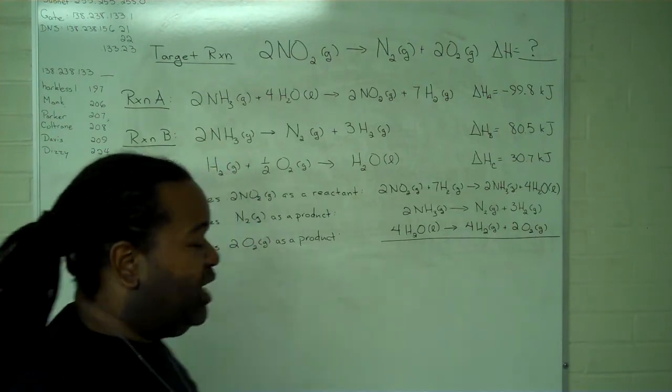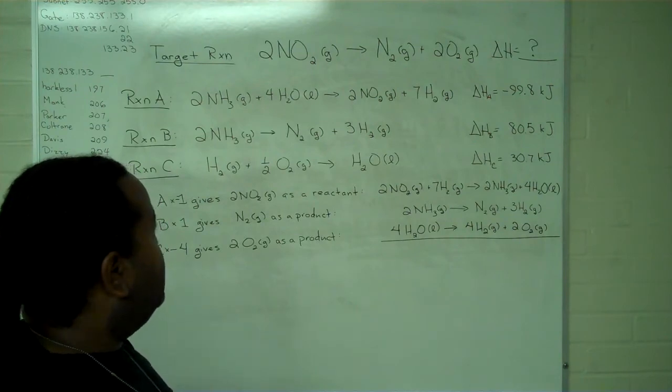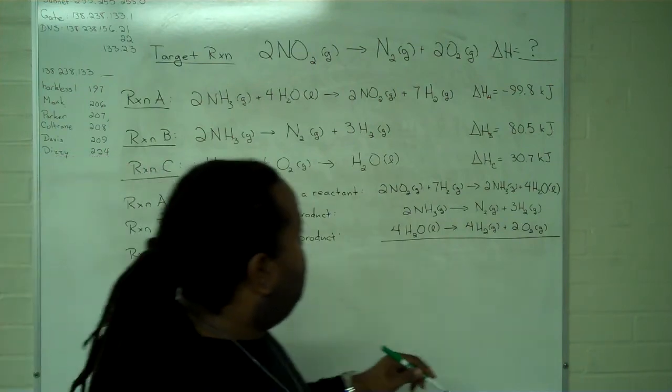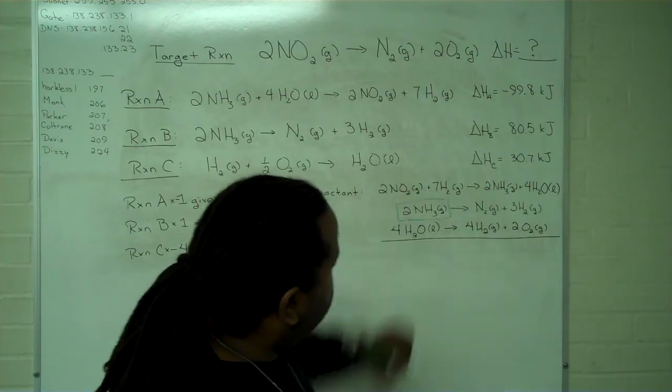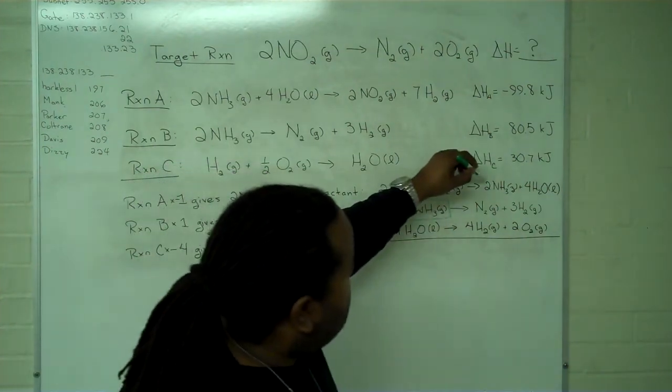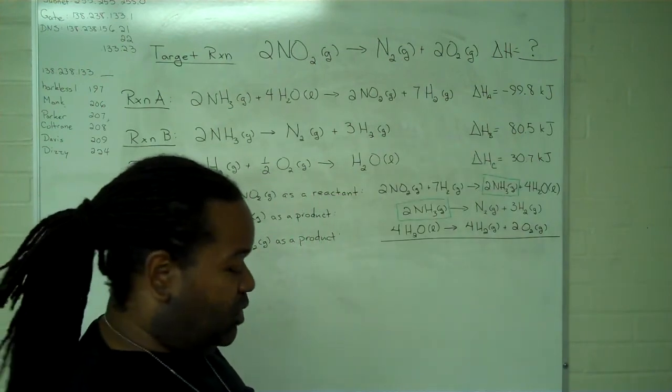And now I only need to combine and cancel. So using green, I can verify that two moles of NH3 are reactants and two moles of it are products, so those will cancel.